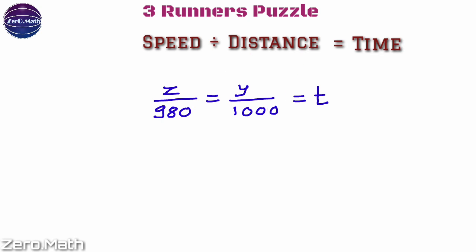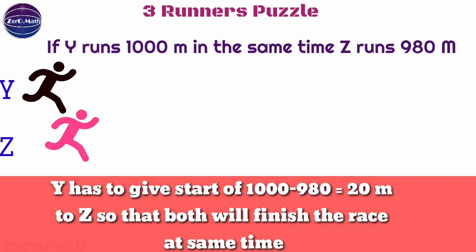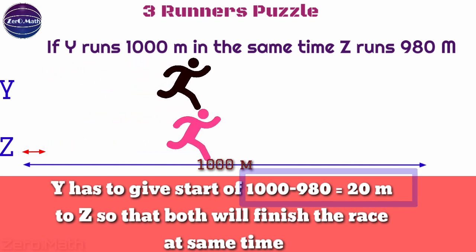Which means if Y runs 1000 meters, in the same time Z runs 980 meters. Hence Y has to give a start of 1000 - 980 = 20 meters to Z so that both will finish the race in the same time.